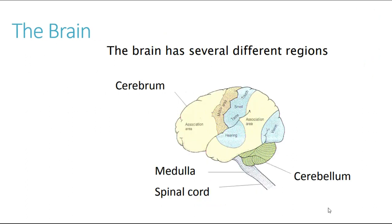The brain is the major organ of the nervous system, and there are three main structures that you need to be familiar with. We have the cerebrum, which is the largest portion of the brain — it's at the surface where it's folded — and this is responsible for all those higher brain functions: processing information, thinking, planning, memories, and all our different senses. Lots of very key functions are taking place within the cerebrum.